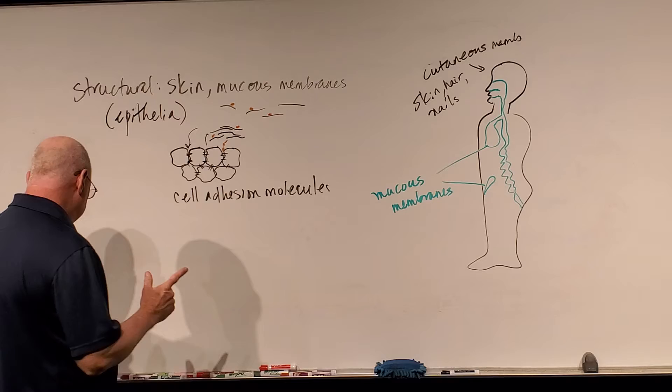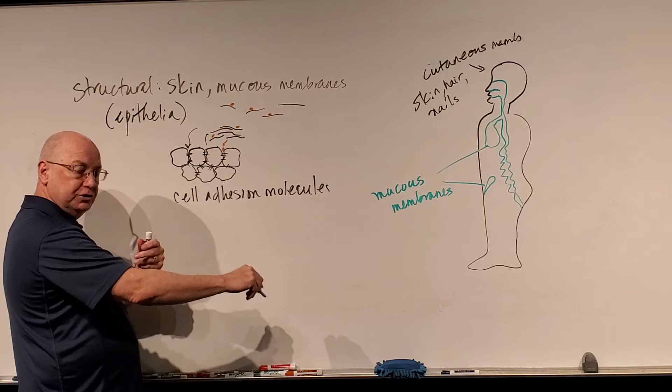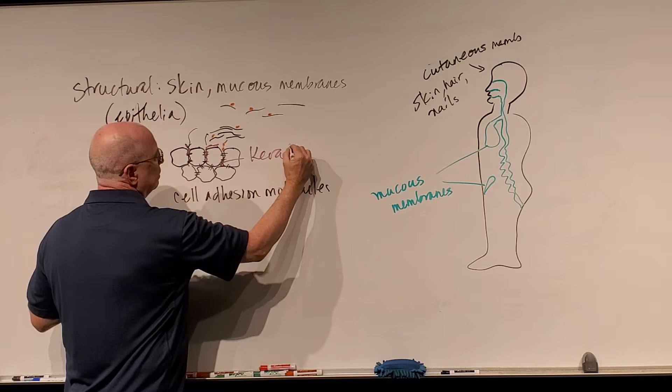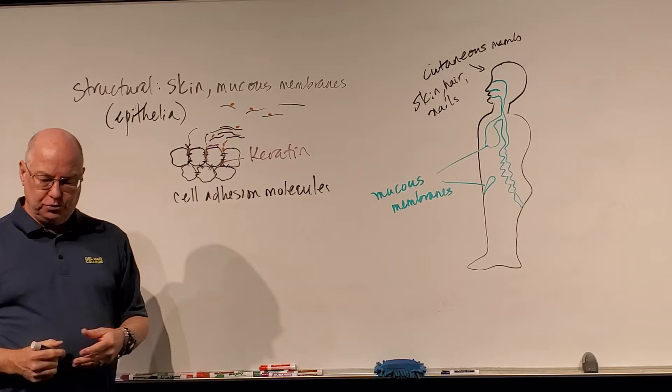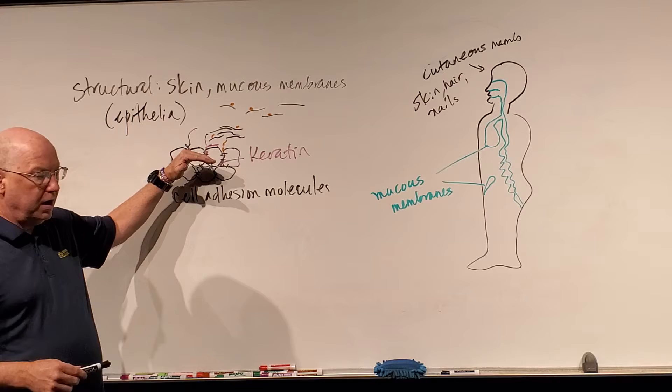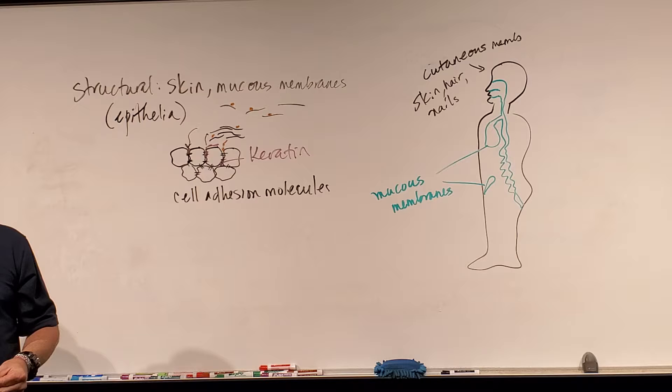Another important thing is that we secrete a protein in our epithelium on the cutaneous membrane called keratin. That keratin makes our skin rather dry and water resistant. A lot of bacteria and pathogens need moisture in order to survive. Because we have very little water and moisture on the surface of our skin, it makes it difficult for some of these microbes to survive.